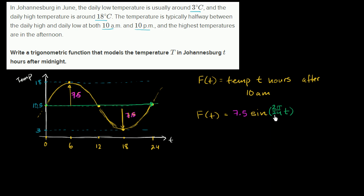To remind yourself: when t equals 0, the argument to sine is 0; when t equals 24, the argument is 2π, so we've made one full rotation. We're almost done. If we just graphed this, the midline would be around 0, but we see that we've shifted everything up by 10.5. So we add 10.5. We could simplify 2π over 24 to π over 12. This models the temperature in Johannesburg t hours after 10 a.m.